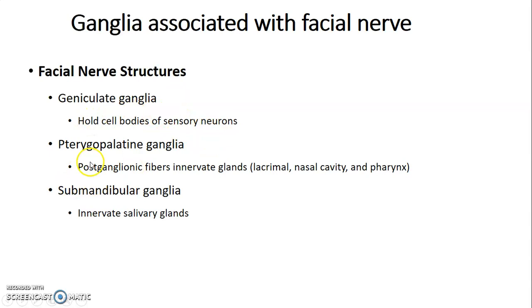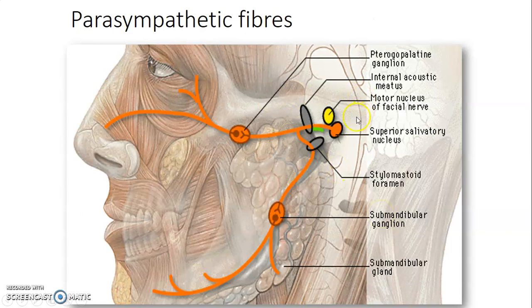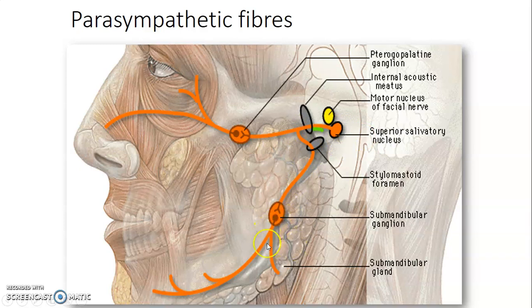From the pterygopalatine ganglion, postganglionic fibers innervate the lacrimal gland, nasal cavity glands, and mucosal glands within the pharynx. From the submandibular ganglion, postganglionic secretomotor fibers innervate the submandibular and sublingual salivary glands. So the superior salivatory nucleus sends preganglionic fibers via nervus intermedius to both the pterygopalatine and submandibular ganglia.